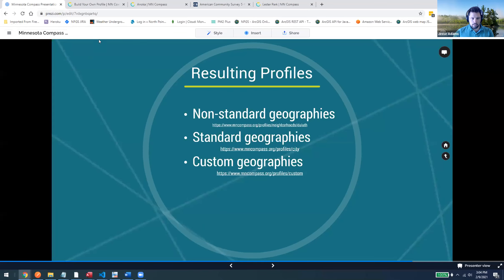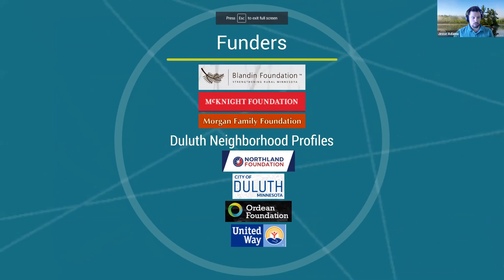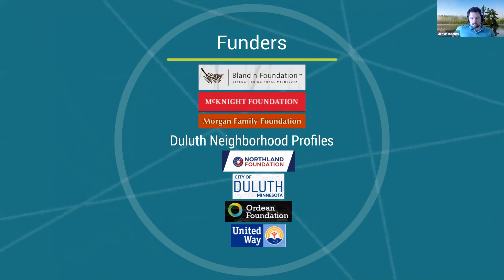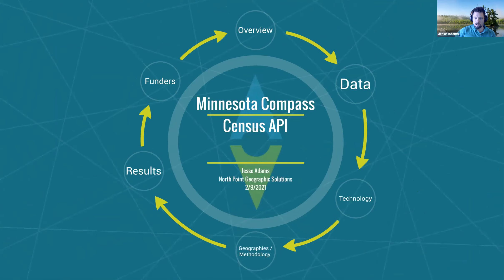The funders for the Duluth profiles are listed on that page. The Blandin Foundation, McKnight Foundation, and Morgan Family Foundation are all funders for the Minnesota Compass project through the Wilder Foundation. And that is everything I had.